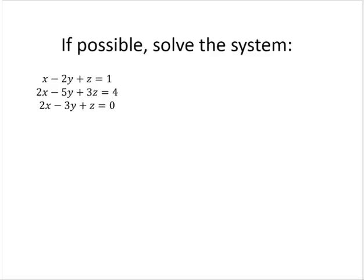I'm going to use an augmented matrix and row operations to solve the system. So the first thing I would do is write the augmented matrix. I'd have 1, negative 2, 1, 1, 2, negative 5, 3, 4, 2, negative 3, 1, 0.